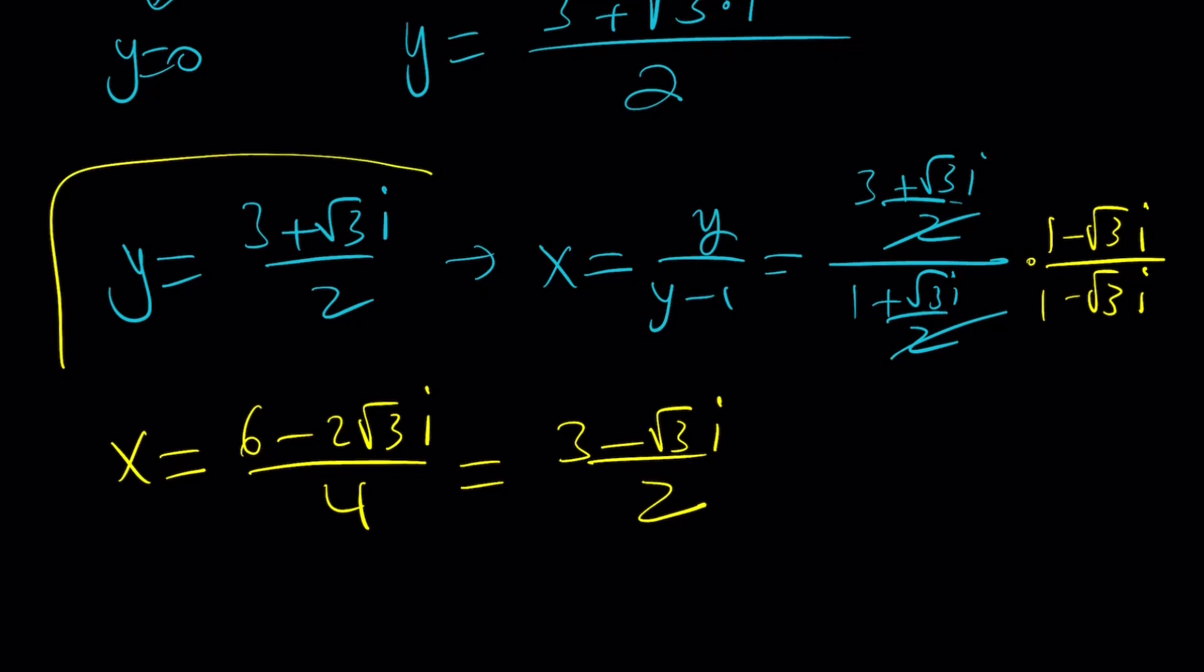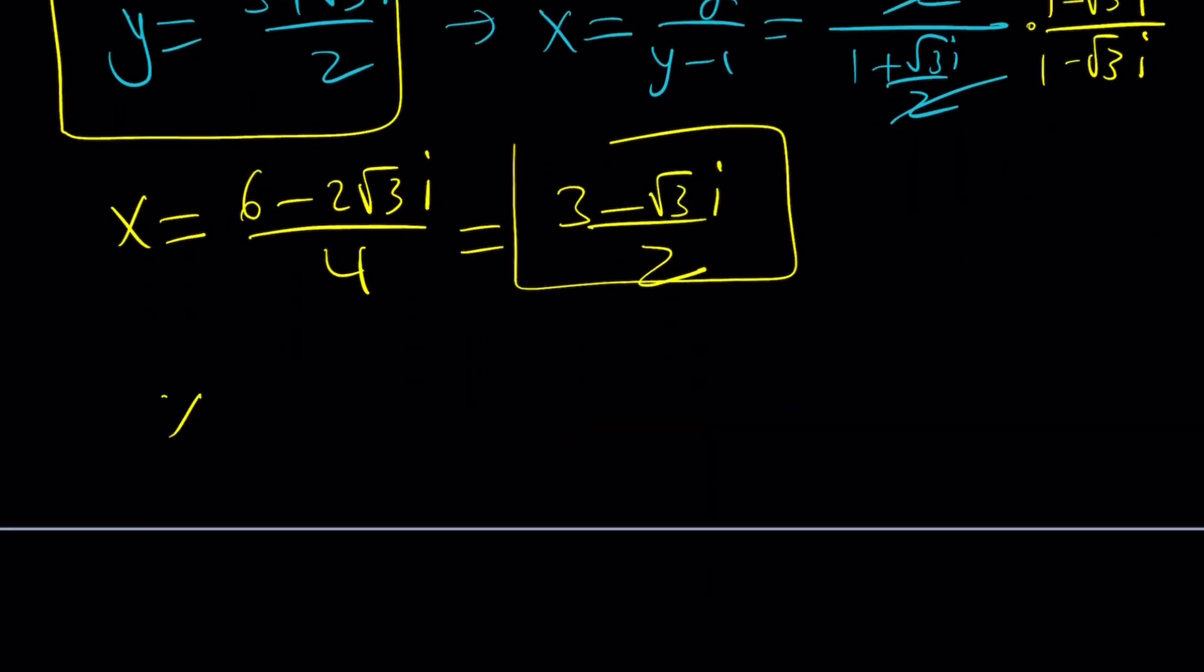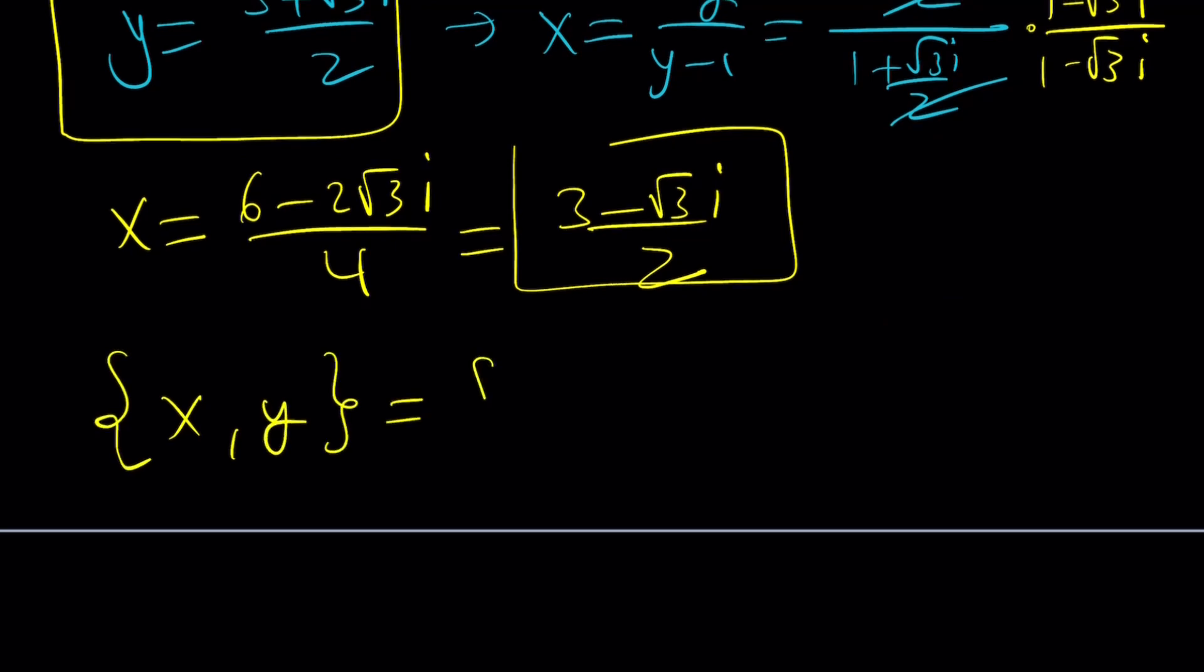x and y are interchangeable. Therefore, we can write this as the set x, y equals 3 plus root 3i over 2 and 3 minus root 3i over 2. So that way, they are interchangeable. Because this is a set and in set notation, the order does not matter, as far as I know. All right. So this brings us to the end of this video.